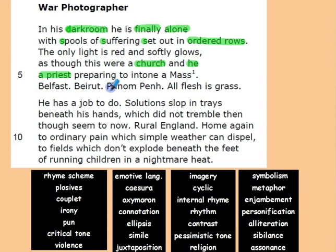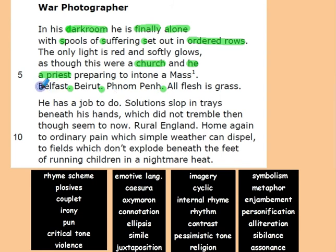'Belfast. Beirut. Phnom Penh.' Belfast in Northern Ireland, Beirut in Lebanon, and Phnom Penh in Cambodia — in all these three countries there have been wars and many people died. He's using full stops, making these one-word sentences. These words are not just one word — they have their own stories and a history of wars in which many people died.